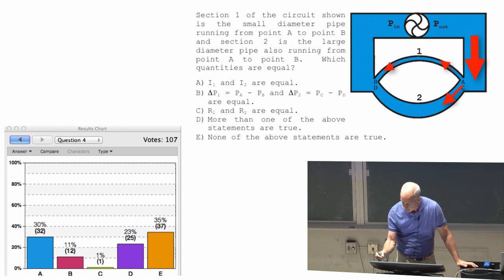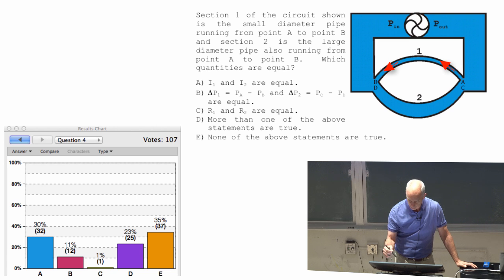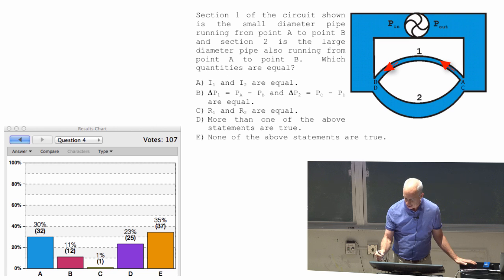The current right here, because there's no other place for it to go, is the same as the current right there. At different parts of that one, of number one, at different sections of number one, have the same current.